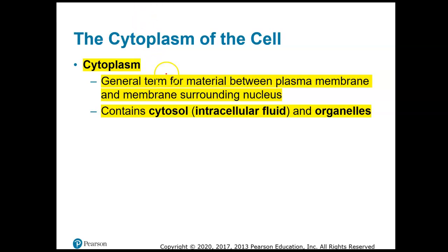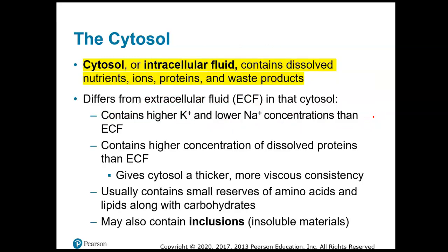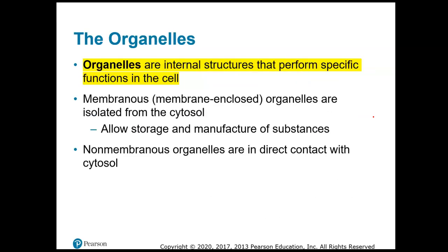The cytoplasm is a general term for everything between the plasma membrane and the nucleus. The cytosol is the fluid inside the cell, and organelles are also found within the cytoplasm. The cytosol contains dissolved nutrients like glucose and amino acids, ions like sodium, potassium, and chloride, as well as proteins and waste products. Organelles are internal structures that perform specific functions — they can be non-membranous like ribosomes, or membranous like mitochondria and the Golgi complex.